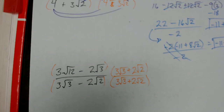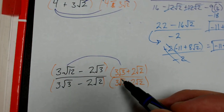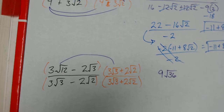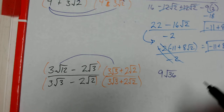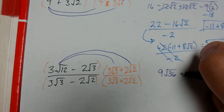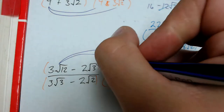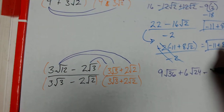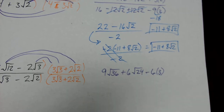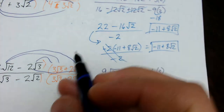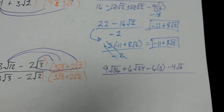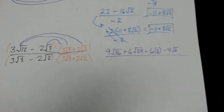I'll insert parentheses around all of these polynomials so I know I need to FOIL. Starting with the numerator: first times first — 3 root 12 times 3 root 3 gives me 9 times root 36. Outside times outside: 3 root 12 times 2 root 2 gives me positive 6 root 24. Inside times inside: negative 2 root 3 times 3 root 3 gives me negative 6 times 3, because root 3 times root 3 is just 3. Last times last: negative 2 root 3 times positive 2 root 2 gives me negative 4 root 6. That's my numerator — this one's more complex with more simplification to do.